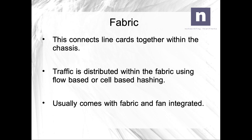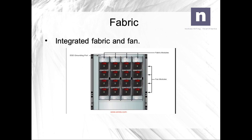Let's talk about the fabric. The fabric is the component inside a chassis responsible for connecting the line cards together. Traffic is distributed within the fabric using either flow-based or cell-based hashing. The fabric usually comes as fabric-only or with a fan integrated. Here you can see an example of a fabric with an integrated fan — the fan handles are red, meaning front-to-rear airflow with cold air from the front and hot air expelled at the rear.